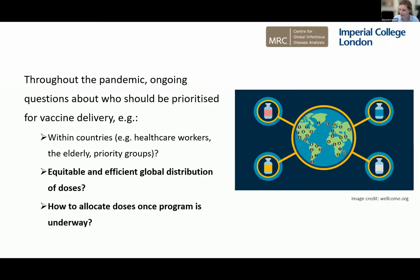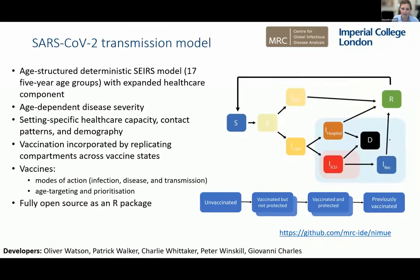I'm going to say a few things about questions two and three that I've flagged there. First, I'll talk about the question of efficient global distribution of vaccines. To introduce our overall modeling approach: this is a SARS-CoV-2 transmission model developed since the beginning of the pandemic by the team at Imperial College. It's an SEIRS-type compartmental model with the hospitalization, severe disease, and death pathway as well.